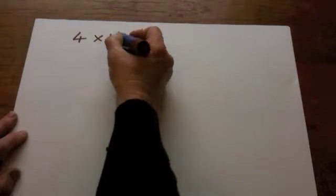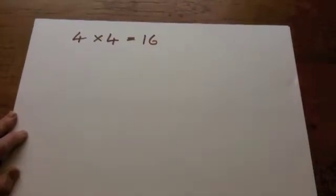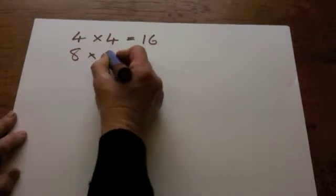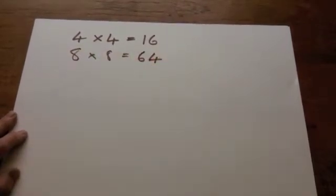We're looking at square numbers. Here's an example. 4 times 4 is 16. 16 is called a square number. Here's another one. 8 times 8 is 64. 64 is another square number.